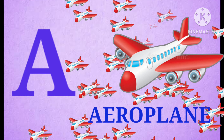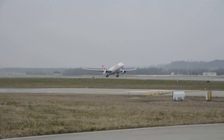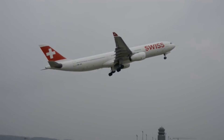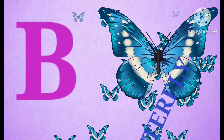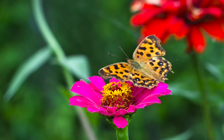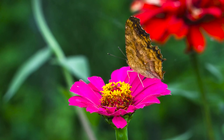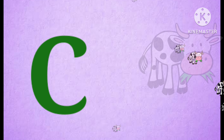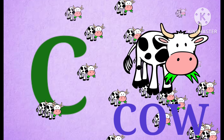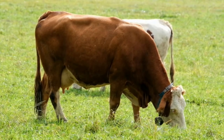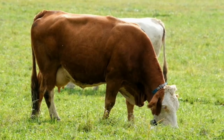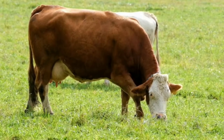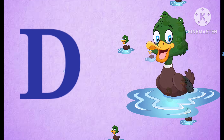A. A for Aeroplane. B. B for Butterfly. C. C for Cow. D. D for Duck.